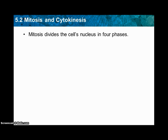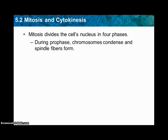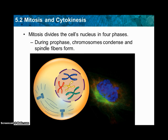Mitosis divides the cell nucleus into four phases. During the first phase, prophase, chromosomes condense and spindle fibers form. The nuclear envelope breaks down, the centrioles begin to move to opposite poles, and that's when the spindle fibers form. Page 133 has a great diagram showing what's happening as we go along. The spindle fibers move to each side and start pulling the chromosomes.